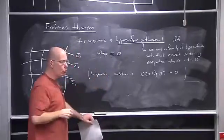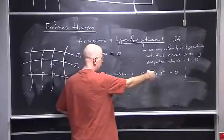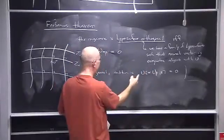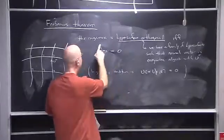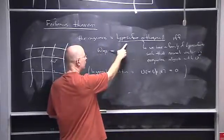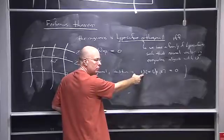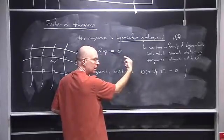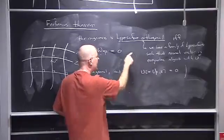In the book I show a bit more about this — I sort of prove it in one direction but not the other. What I do is prove that if you have hypersurface orthogonality then you have vanishing rotation. What I don't prove is the converse, because that's the hard part.